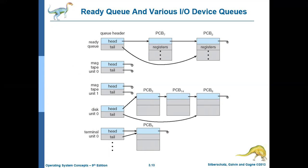Basically the operating system uses linked lists to maintain these queues. You can see there are different types of linked lists here. This is the ready queue. The ready queue contains two pointers — the head pointer and the tail pointer. The head pointer points to the first process and the tail pointer points to the last process. Currently the ready queue contains two processes: process two and process seven. Each node refers to the respective PCB (process control block), which includes all information about a process such as the process ID and registers, as discussed in the last class.